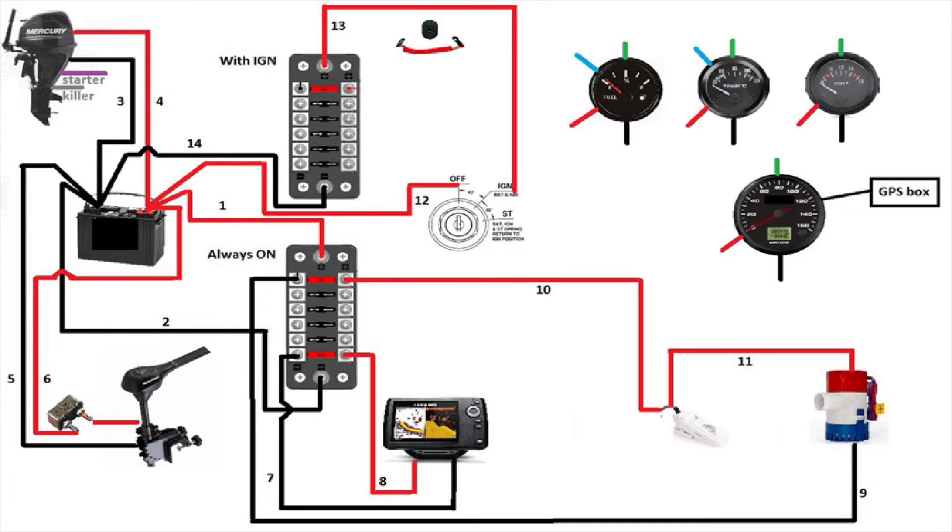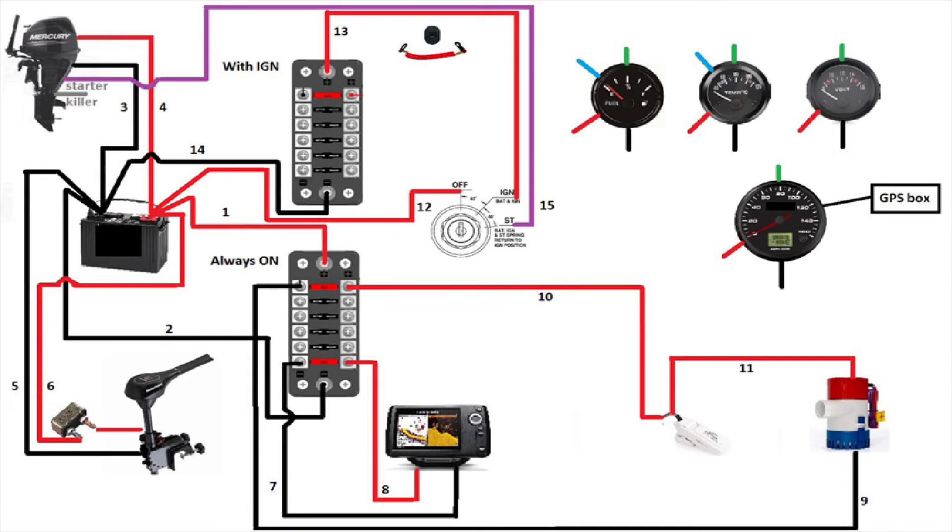To complete the ignition key section, there's the starter engine wire to connect. It's usually yellow with a red line on it. You'll turn the key to start your engine, just like a car.